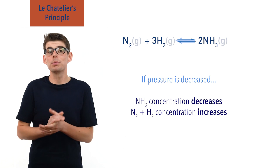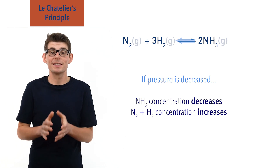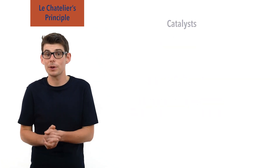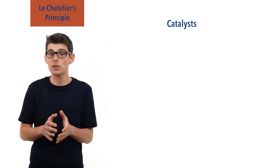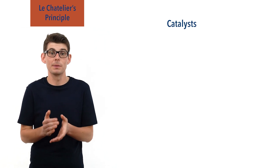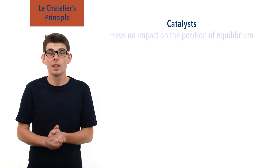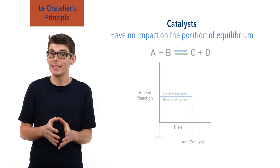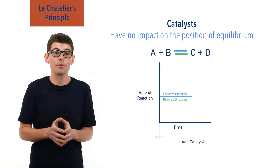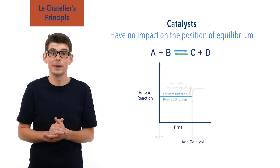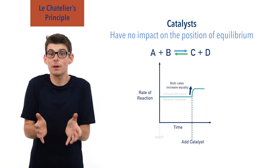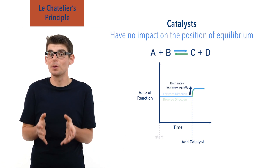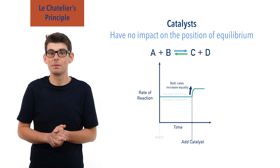One final point to note is that if a catalyst is added to a system at equilibrium, no change in the position of equilibrium occurs. This is because a catalyst would increase the rates of the forward and reverse reactions equally, meaning they would still be the same as each other, even if they are both faster than they were before.